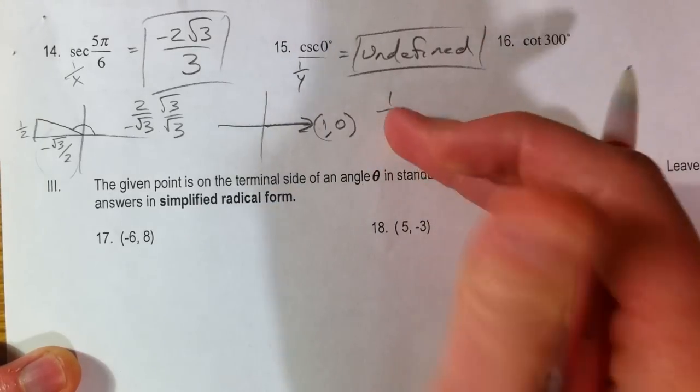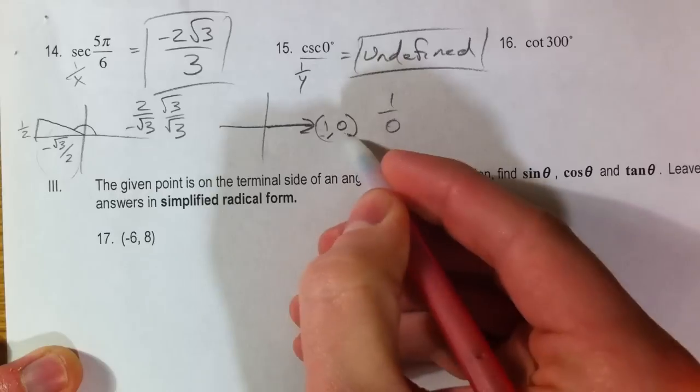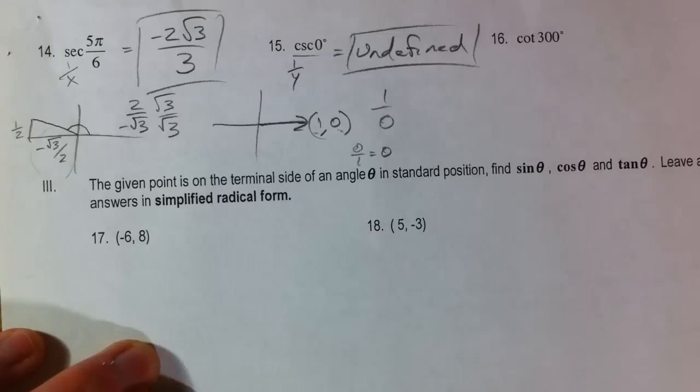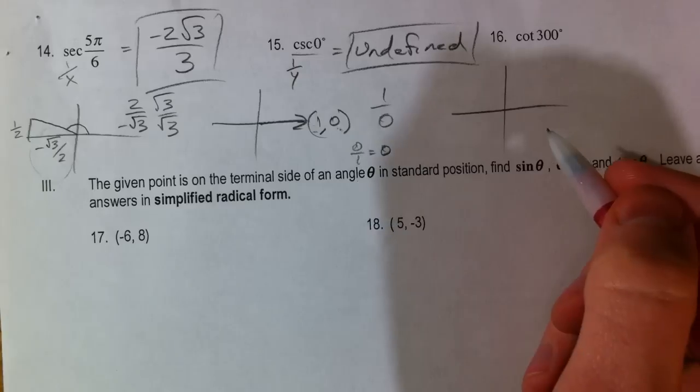However, if we had asked for 0 over 1, the tangent maybe, 0, the y over the x, 0 over 1 equals 0. Just keep it in mind. Keep those two straight. Cannot divide by 0.